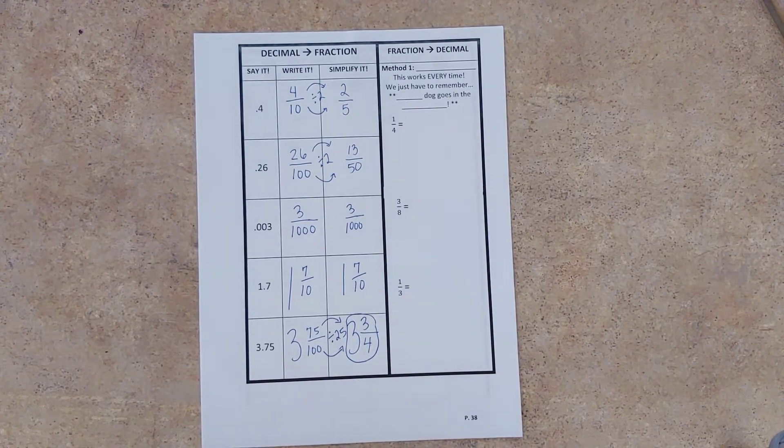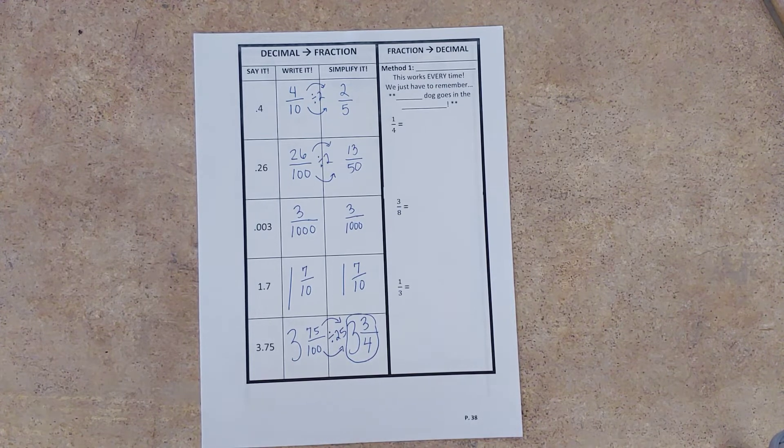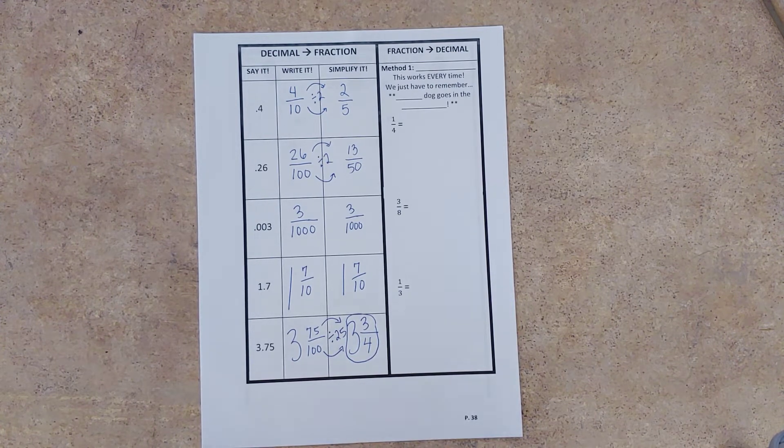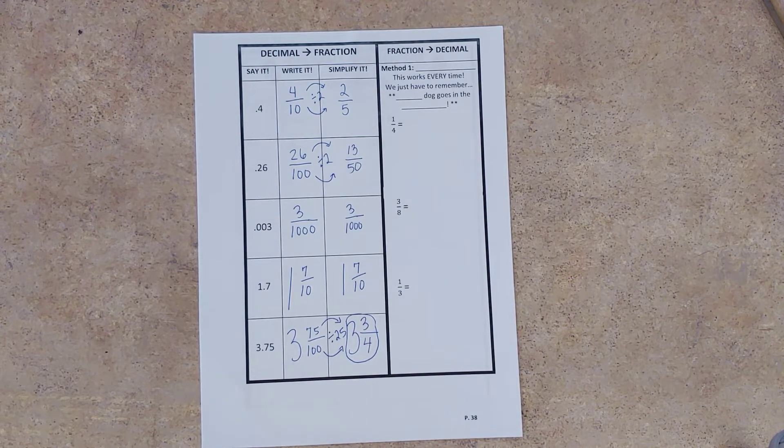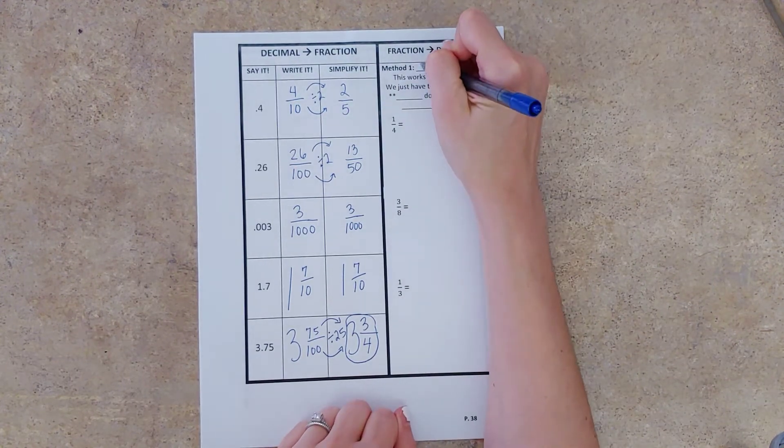All right, so decimal to fraction. Say it, write it, simplify it. To go from a fraction to a decimal, we already know how to do this. We know that the fraction bar means to divide. And that's exactly what we're going to utilize.